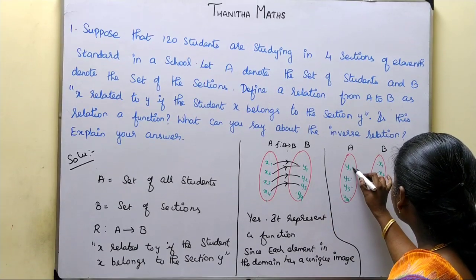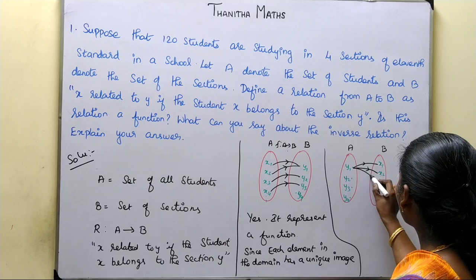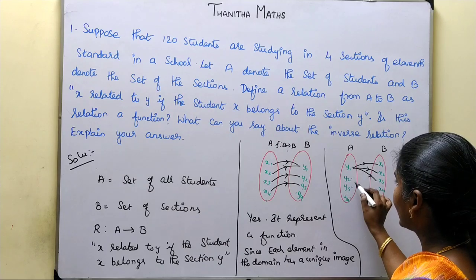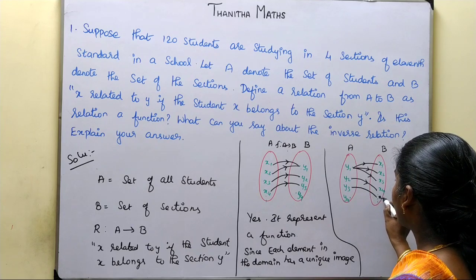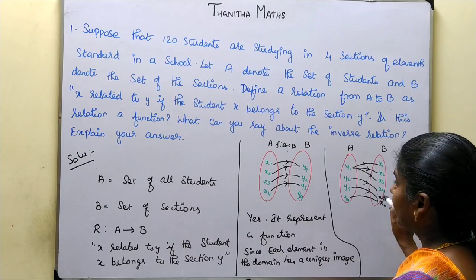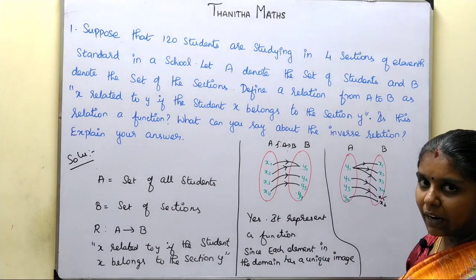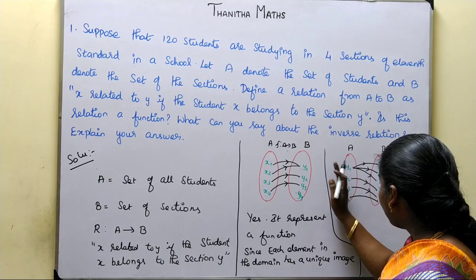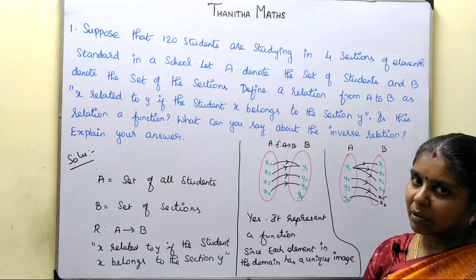Now consider one section, say y1. In section y1, there may be students x1, x2, x3. In section y2, there is student x4. In section y3, student x5. In section y4, student x6. So there are many students in one section. If a domain element does not have a unique image, then the function does not exist.